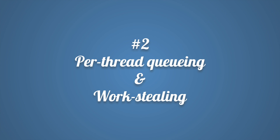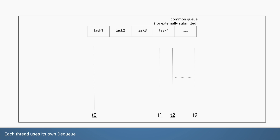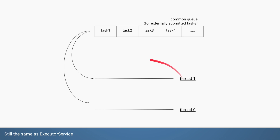That's the first way fork join pool differs from executor service. The second way is fork join pool has per-thread queuing and a concept called work stealing. Fork join pool still has a common blocking queue for storing tasks and a set of threads which pick tasks from it — so far exactly the same as executor service.